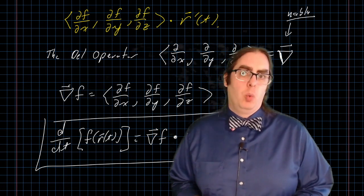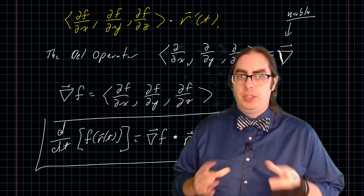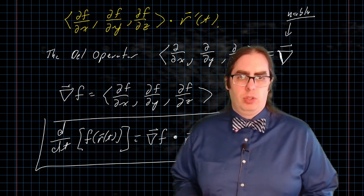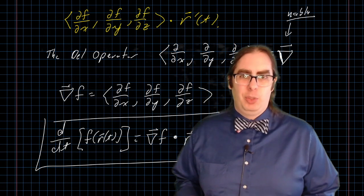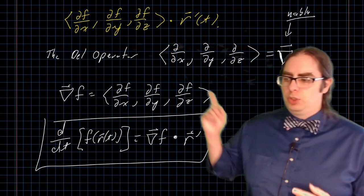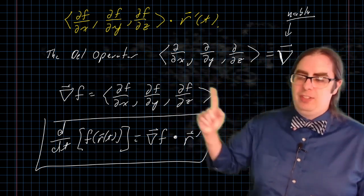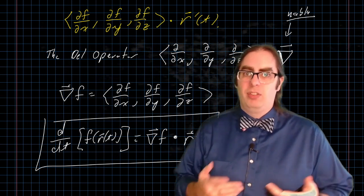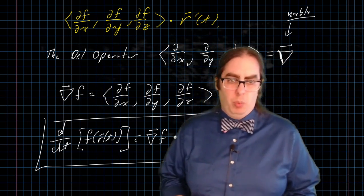All right, to simplify our work, I'm going to go from the three dimensions down to two dimensions. And it extends, or unextends, exactly how you would expect. If the del operator in three dimensions has partial with respect to x, y, and z, the del operator in just two dimensions will have partial with respect to just x, and with respect to just y.